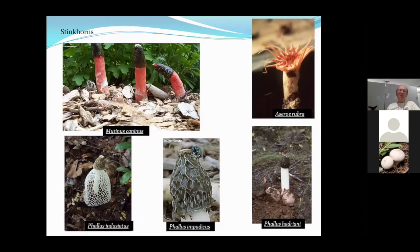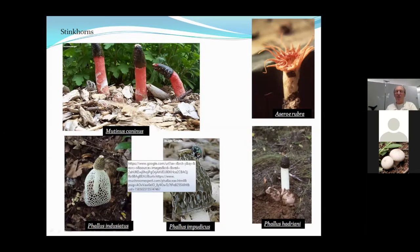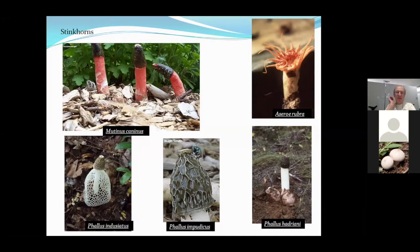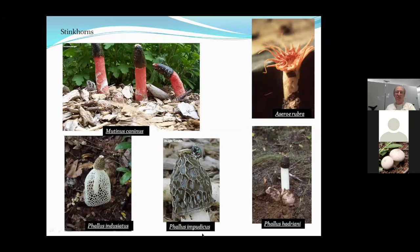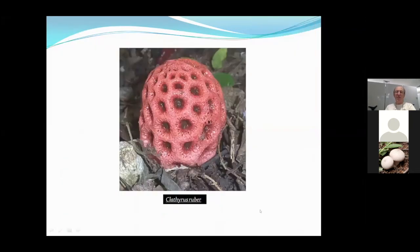Another interesting group of Basidiomycetes related to puffballs are the stinkhorns. They really smell — you can often smell them before you see them. They smell like poop and attract flies, which land on them, collect the spores from the gooey surface, and fly away spreading the spores. They have elaborate shapes, like Phallus indusiatus. Clathrus ruber is another stinkhorn — I once found about 500 of them growing on a hotel lawn in Florida.